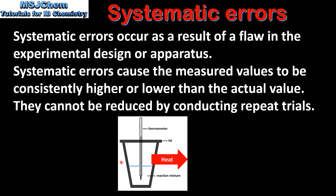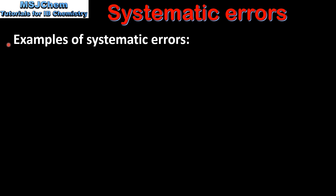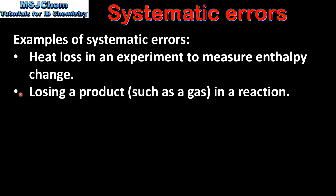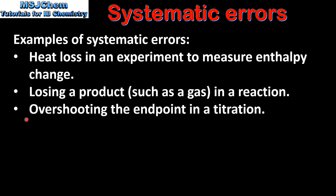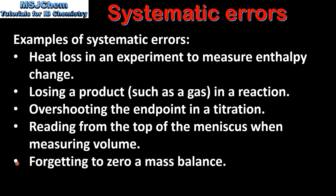An example of a systematic error is heat loss to the surroundings when carrying out an enthalpy change experiment. Finally, here are some examples of systematic errors: heat loss in an experiment to measure enthalpy change; losing a product such as a gas in a reaction; overshooting the endpoint in a titration; reading from the top of the meniscus when measuring volume; and forgetting to zero a mass balance.